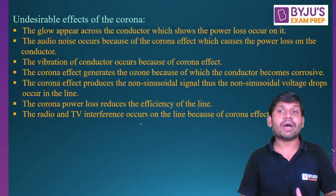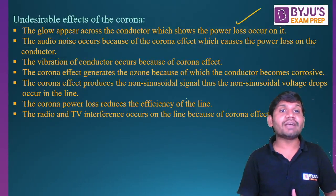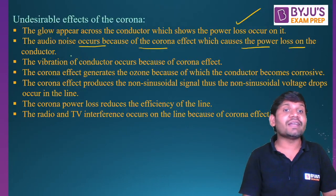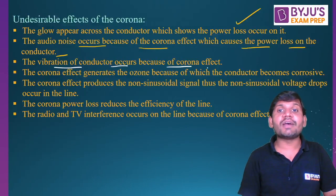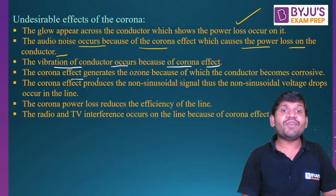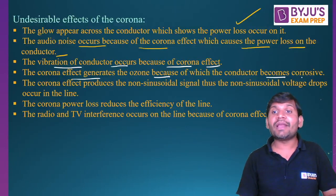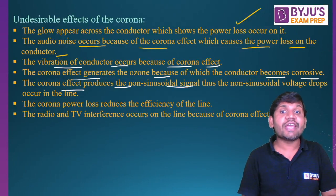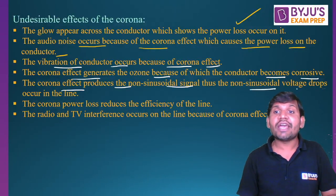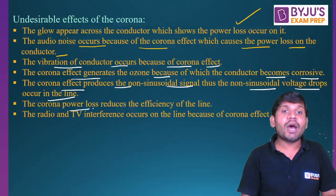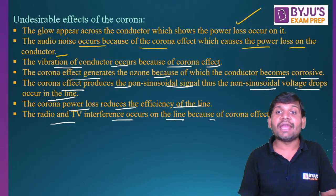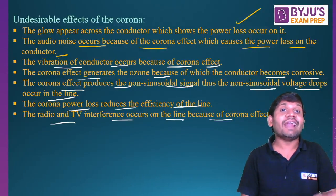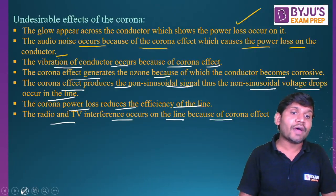What are the undesirable effects of corona? Corona causes power losses. Audio noise occurs because of the corona effect, which causes power loss on the conductor. The vibration of conductors occurs because of the corona effect. Corona effect generates ozone, because of which the conductor becomes corrosive. The corona effect produces a non-sinusoidal signal, so non-sinusoidal voltage drops occur in the line. Corona power loss reduces the efficiency of the line. Radio and TV interference occurs on the line because of the corona effect.